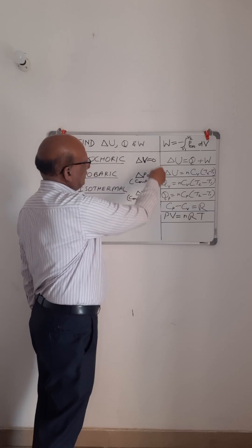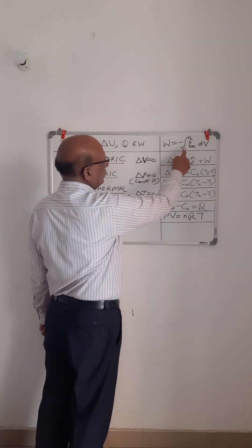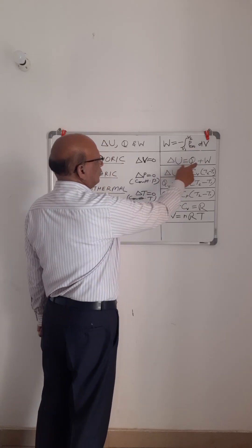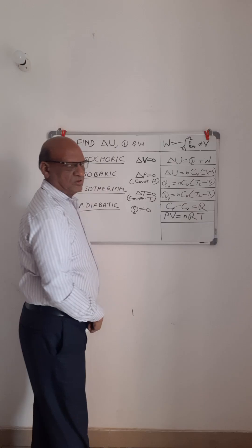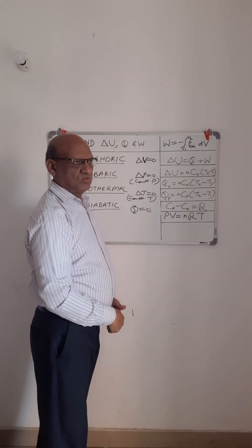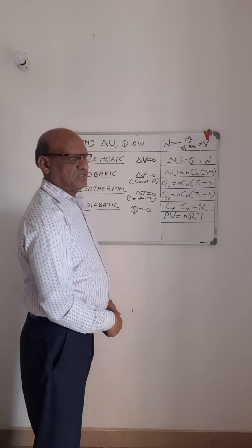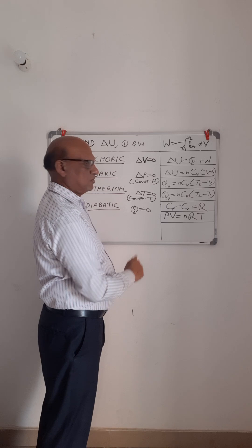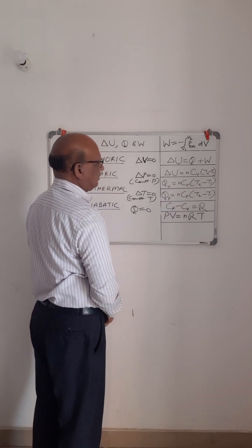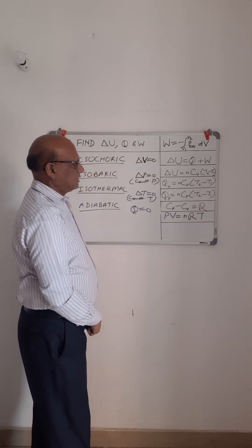In these processes we will use the following equations, which are valid for all processes: work done equals minus integral from V1 to V2 of P external dV; delta U equals Q plus W, which is the first law of thermodynamics, where Q is positive when heat is added to the system and W is positive when work is done on the system — as per the convention of chemistry. And delta U equals NcV(T2 minus T1), which is valid for all processes irrespective of the process type.